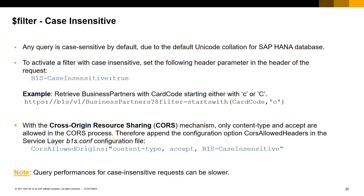In SAP HANA, due to the default Unicode collation, any query is case-sensitive. The service layer allows the activation of case-insensitive filters by setting the parameter b1s-case-insensitive=true in the request header.